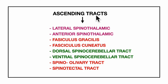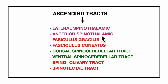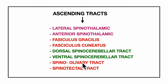Now we will learn about the ascending tracts of the spinal cord: the lateral spinothalamic tract, the anterior spinothalamic tract, the fasciculus gracilis and fasciculus cuneatus, the dorsal and ventral spinocerebellar tracts, and the spinoolivary and spinotectal tracts. The lateral and anterior spinothalamic tracts carry exteroceptive sensations; the fasciculus gracilis and fasciculus cuneatus carry proprioceptive sensations; the dorsal and ventral spinocerebellar tracts carry reflex proprioceptive sensations; the spinoolivary and spinotectal tracts are responsible for proprioceptive and visual reflexes.